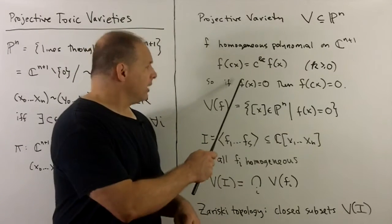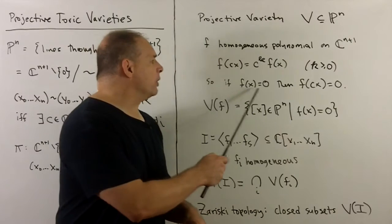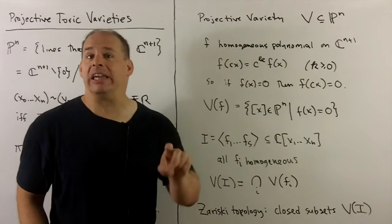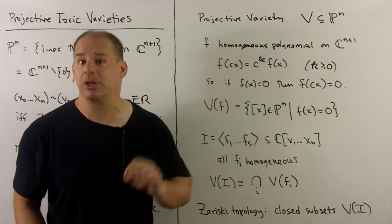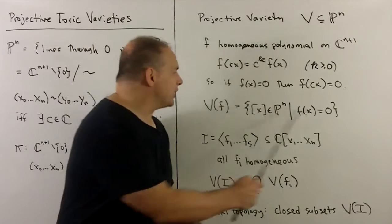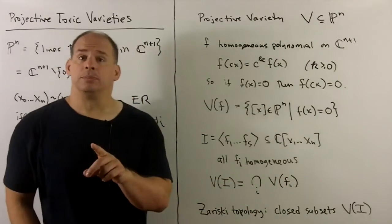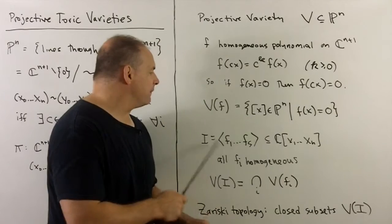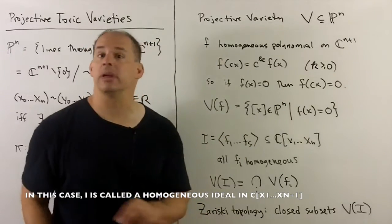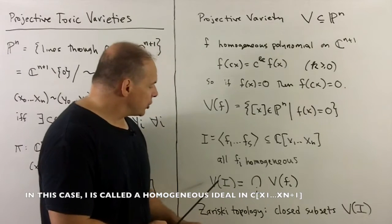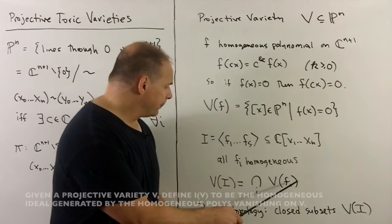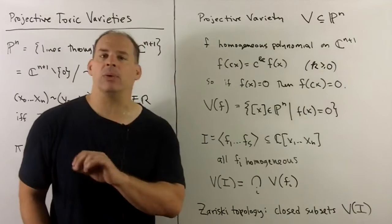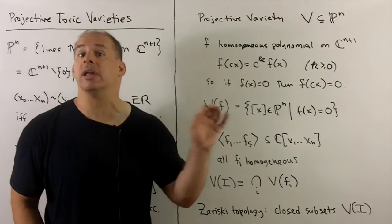This means if we have some point where our polynomial vanishes, it's going to vanish on any scalar multiples, and so it'll vanish on the entire class in projective space. So zero sets will be well-defined when we pass to the quotient. For complex projective varieties, we just take some finite subset of these homogeneous polynomials — they can have different degrees — and intersect the zero sets for each one. From the affine case, we also have the Zariski topology, and we can talk about open sets, Zariski closure, and so on.